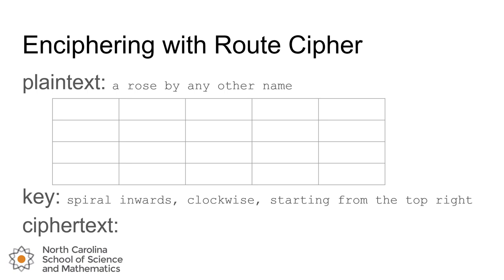The route cipher is another type of transposition cipher, similar to the rail fence cipher. However, unlike the rail fence there's a little bit more flexibility in how you create the cipher text.